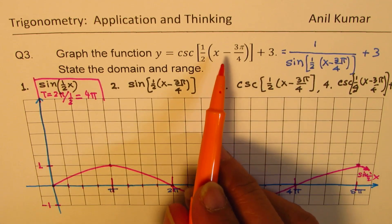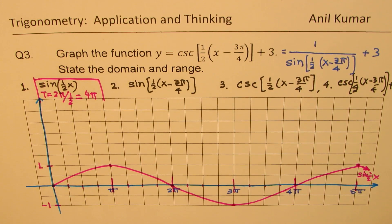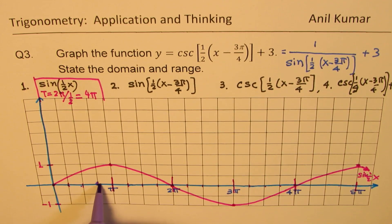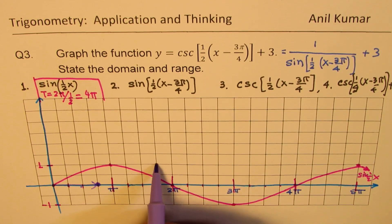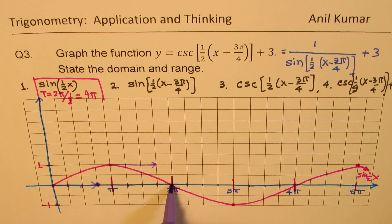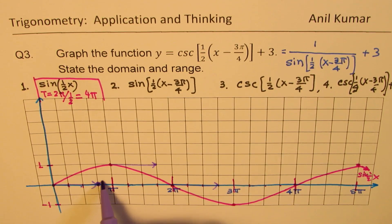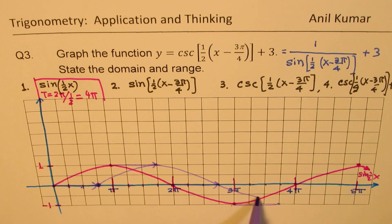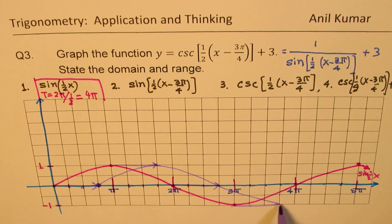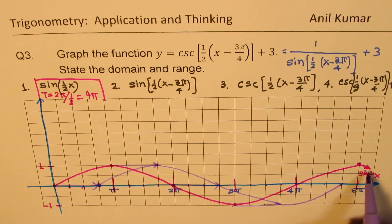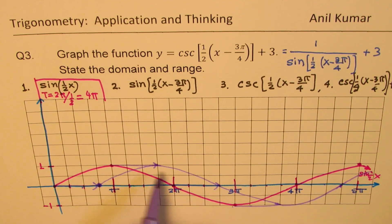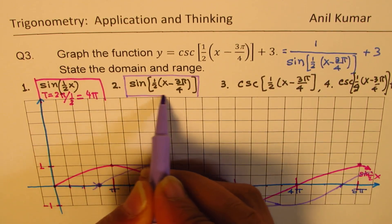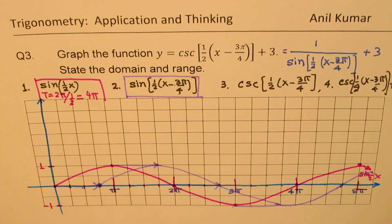The next step is translating 3π/4 units to the right. Marking 1π/4, 2π/4, 3π/4 — every point shifts 3 units to the right. So the curve moves like this: the minimum shifts here, the maximum shifts here, and the graph continues accordingly. This second graph shows the sine function translated 3π/4 to the right.